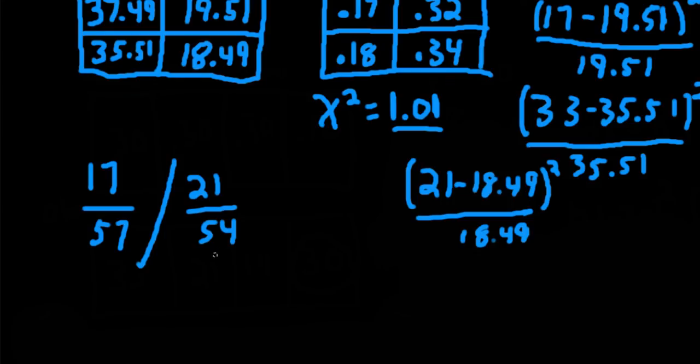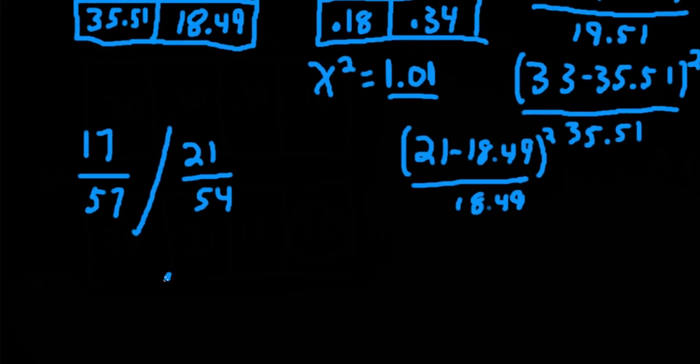So actually, if we take 21 divided by 54, we get 0.38. So it might make more sense if we put that in the numerator. I just like dealing with numbers above 1 for relative risk. So 0.38. We'll move this to the numerator. And then we'll divide it by, we'll take 17 over 57.